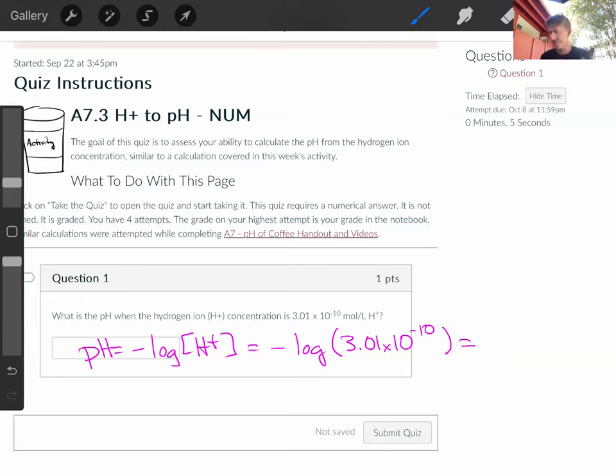And there are a couple different ways to do this. I'll show you how to do it on my calculator. So I don't know if that changed anything, but I've got zero on there. I'm going to type on my calculator 3.01 and then see the exponent button down here. There it is, exponent button.